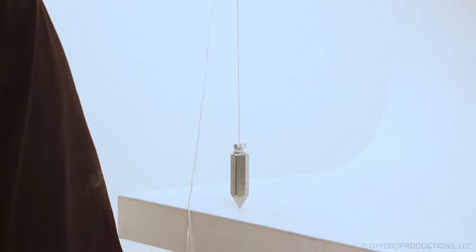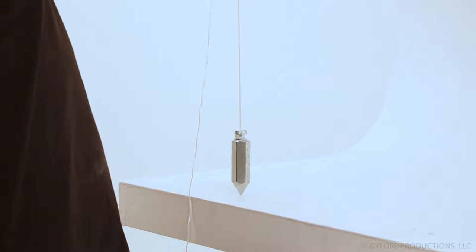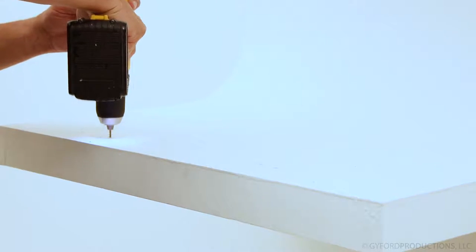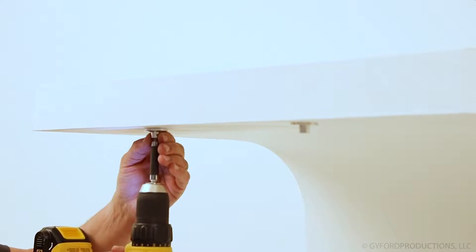Mark your upper and lower mounting points on the ceiling and floor. A plumb bob will aid in this step. Pre-drill your marked holes. Screw in all four base mounts.